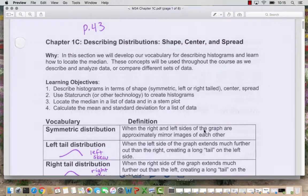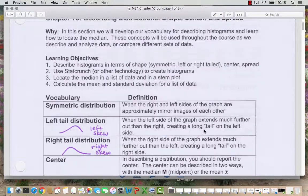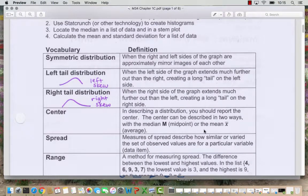Take some time to read through the why, the learning objectives for this activity, and the vocabulary. Notice in the vocabulary section, I sketched a picture for left-tail distribution. You can see the graph of the distribution is not symmetric. We've got a tail out here on the left. This is also known as a left-skew distribution.